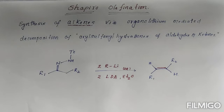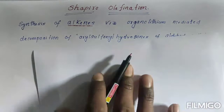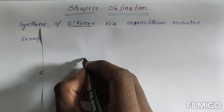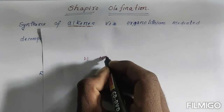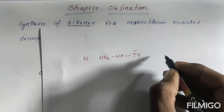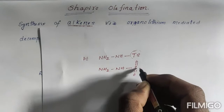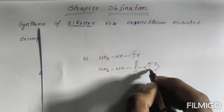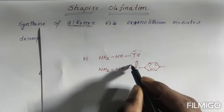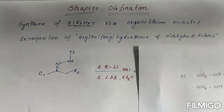Before going to hydrazones, let me explain what a hydrazone is. In this reaction we have taken tosyl hydrazones. So we have NH₂-NH and tosyl (Ts). Instead of writing the full structure — sulfur, two oxygens, and benzene at the para position — we can write Ts, which is nothing but tosyl.